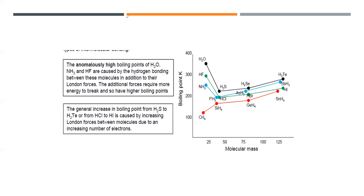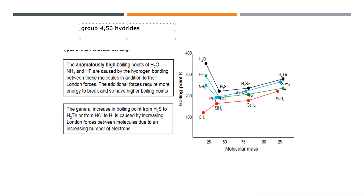As you can see, we have elements like hydrides - we have group six hydrides, group seven hydrides, and group four hydrides. We are comparing the hydrides of each group: group four hydrides, group five hydrides, group six hydrides, and group seven hydrides. We'll compare the trends, starting with group six hydrides.